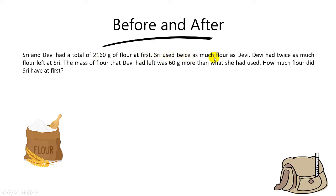Shree used twice as much flour as Debbie. Debbie had twice as much flour left as Shree. The mass of flour that Debbie had left was 60 grams more than what she had used. How much flour did Shree have at first?